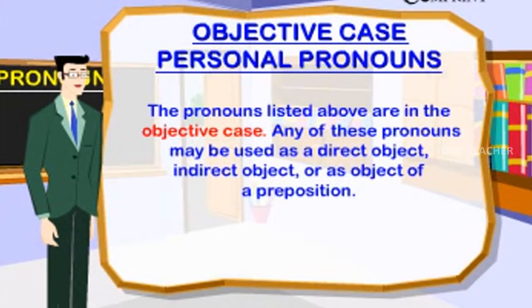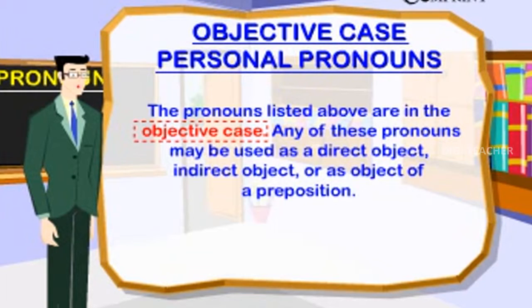Objective case personal pronouns — singular: me, you, him, her, it; plural: us, you, them. These pronouns may be used as a direct object, indirect object, or as object of a preposition.